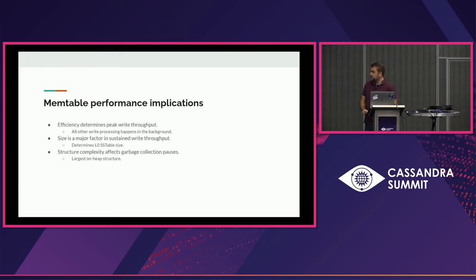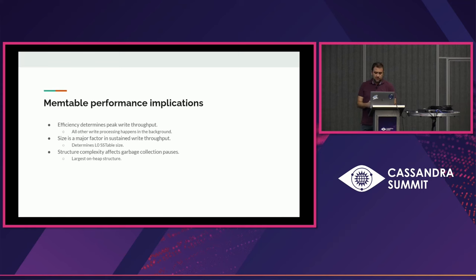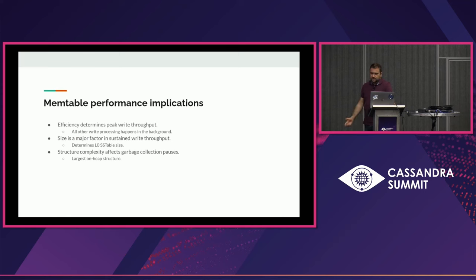Why are memtables important? They are probably the most important thing for the performance of the database. The fact that the memtable is on the synchronous path of every write means it directly determines write throughput — the peak write throughput when you're taking in a lot of data in a short time. We do more processing of every write in the background, so it doesn't slow down other processing until things eventually get saturated.